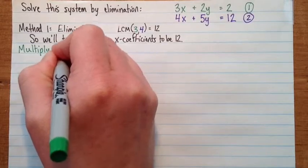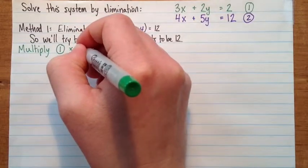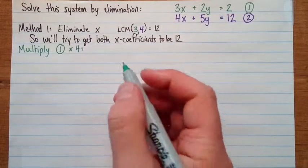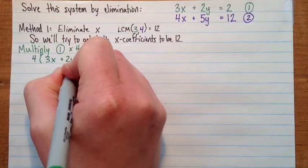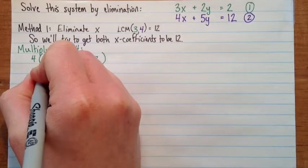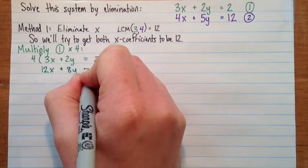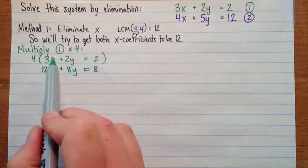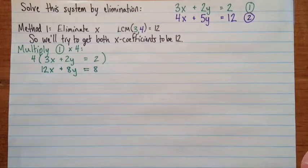Multiply equation 1 by 4. So you have to write that down, so we know where these numbers come from. So we have 4 times, and then I'm going to put the whole equation in brackets, 3x plus 2y equals 2, all of that. So we get 12x plus 8y equals 8. And if you prefer, instead of writing the whole equation in brackets, you can write the 4 on both sides. So you do the left side times 4, and the right side times 4. Just whichever makes more sense to you.